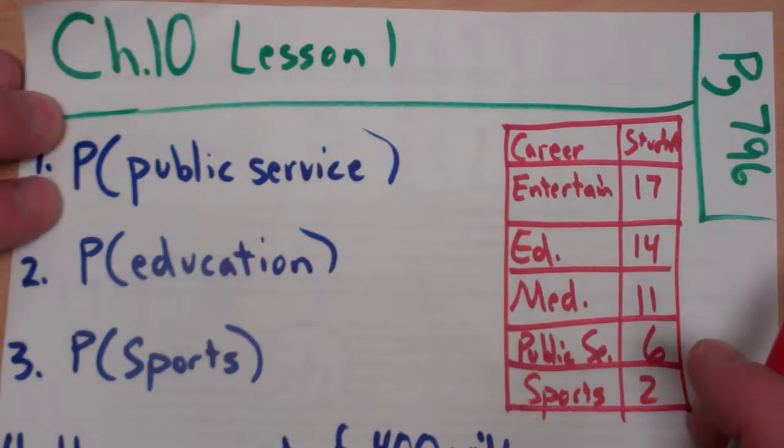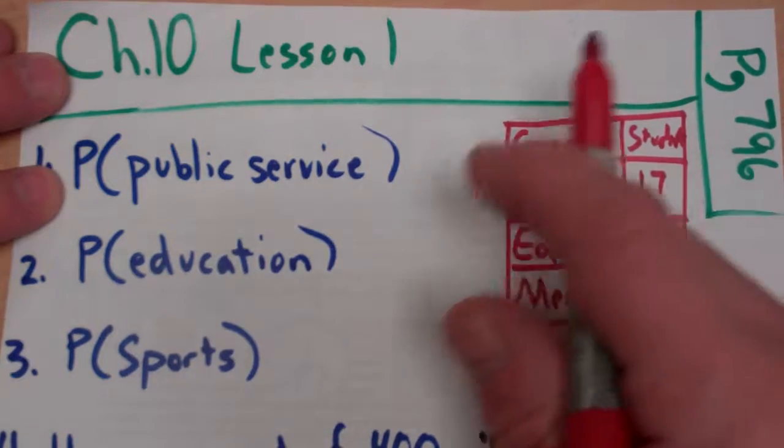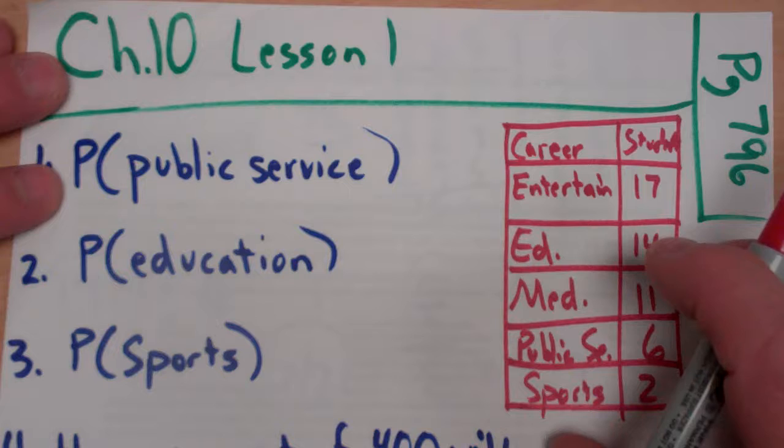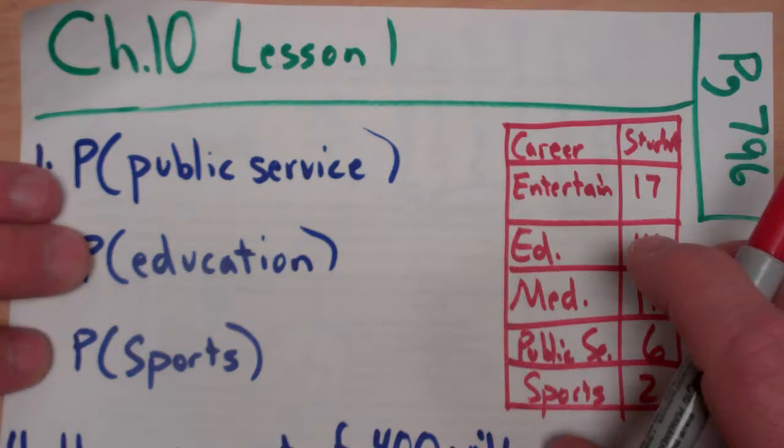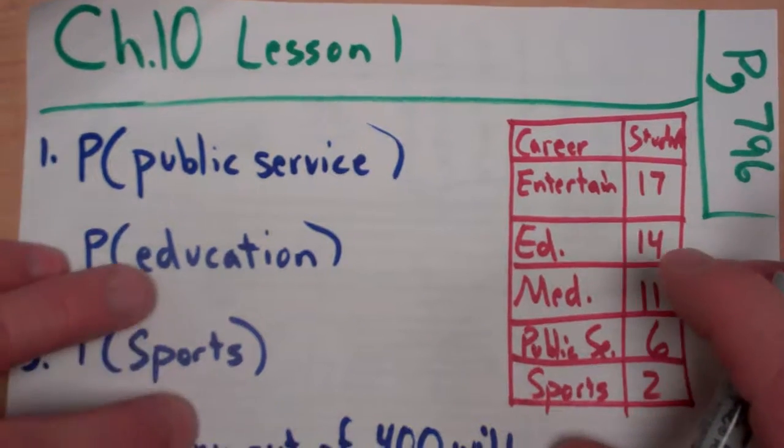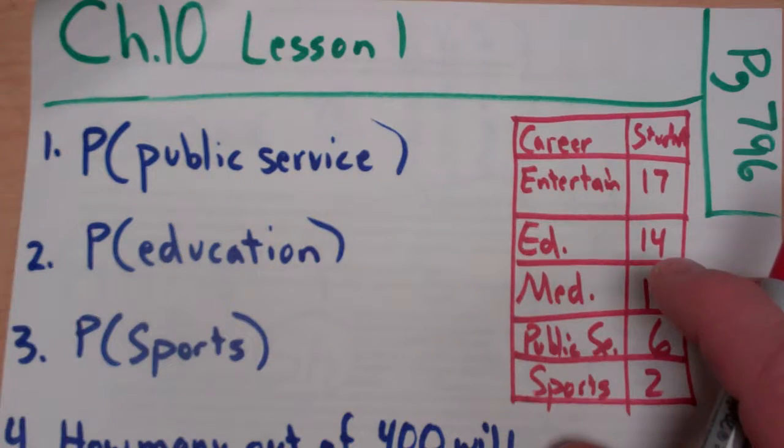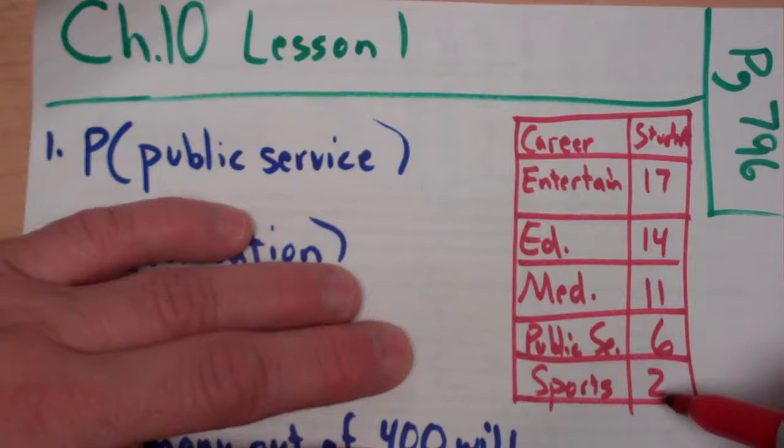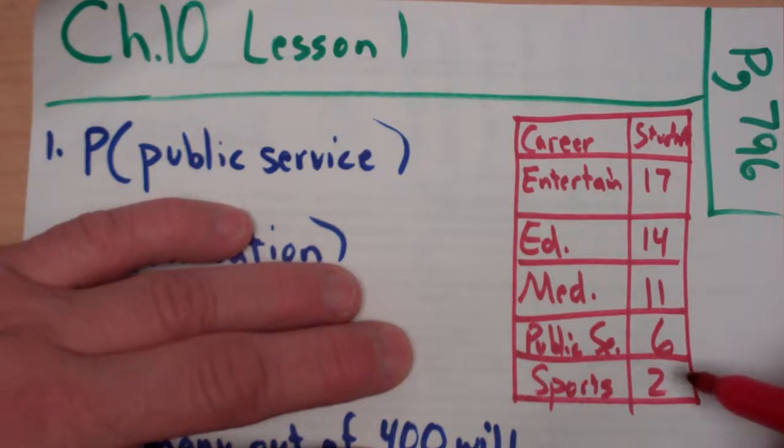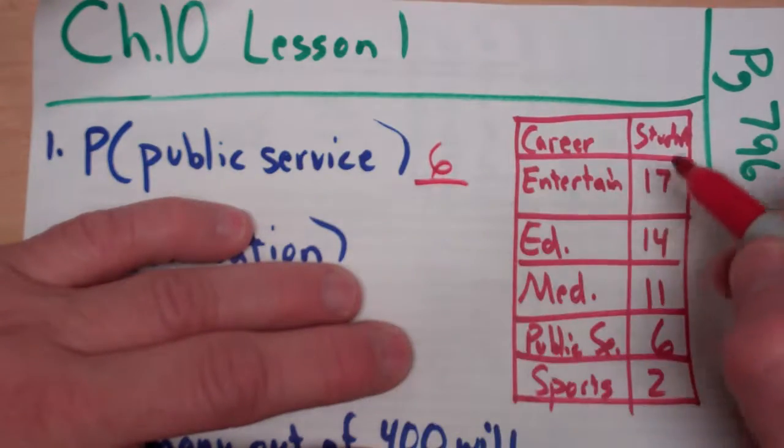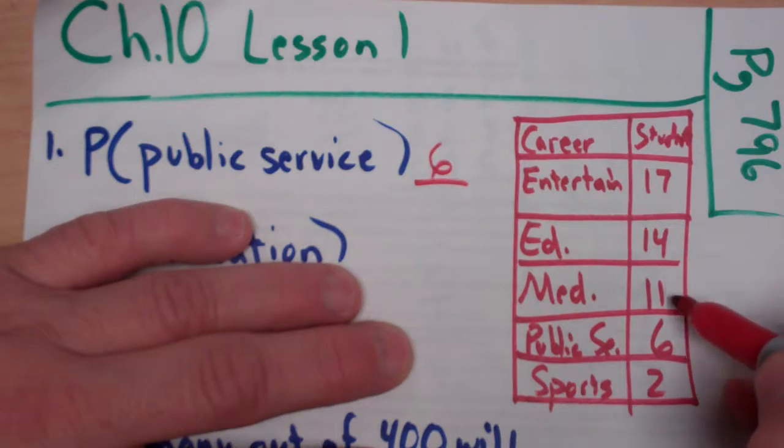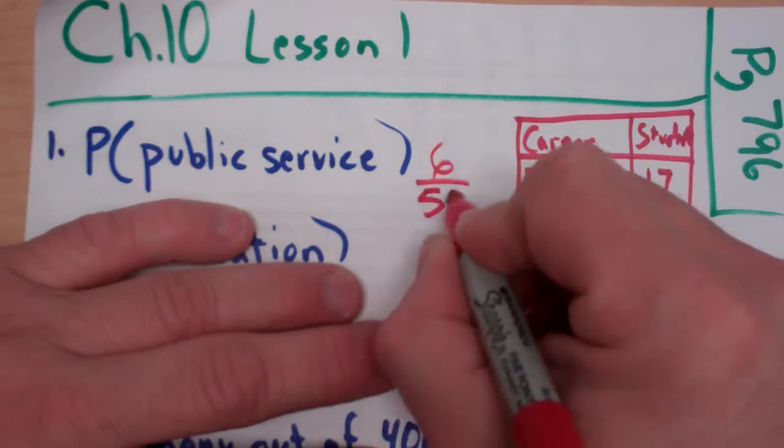So then they want the probability based on a sample because we're going to use this data from a sample and we're going to interpret it and use it to talk about the entire school. So what's the probability that if you pick somebody at random out of the building that they would be wanting to go into public service? Well, based on our sample, public service is 6 out of, and then I'd have to add these up, 31, 43, 50. It would be 6 out of 50.